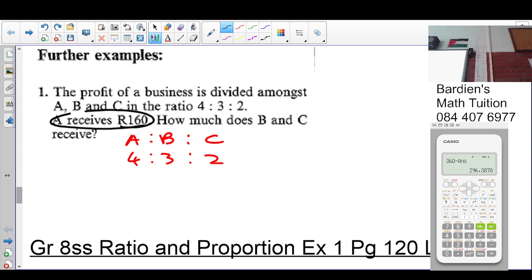A receives 160 rand. So what does that mean? I must put that under A. So A receives 160 rand. How much does B and C receive? In other words, it's going to be 160 divided by 4 to get what it's worth per unit. So 160 divided by 4 is 40, so it's 40 rand per unit.